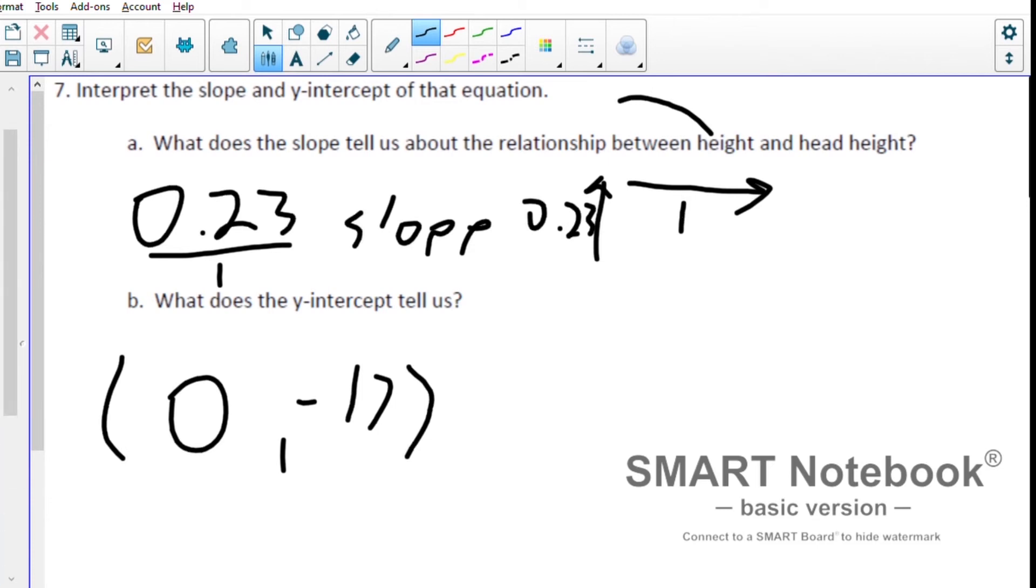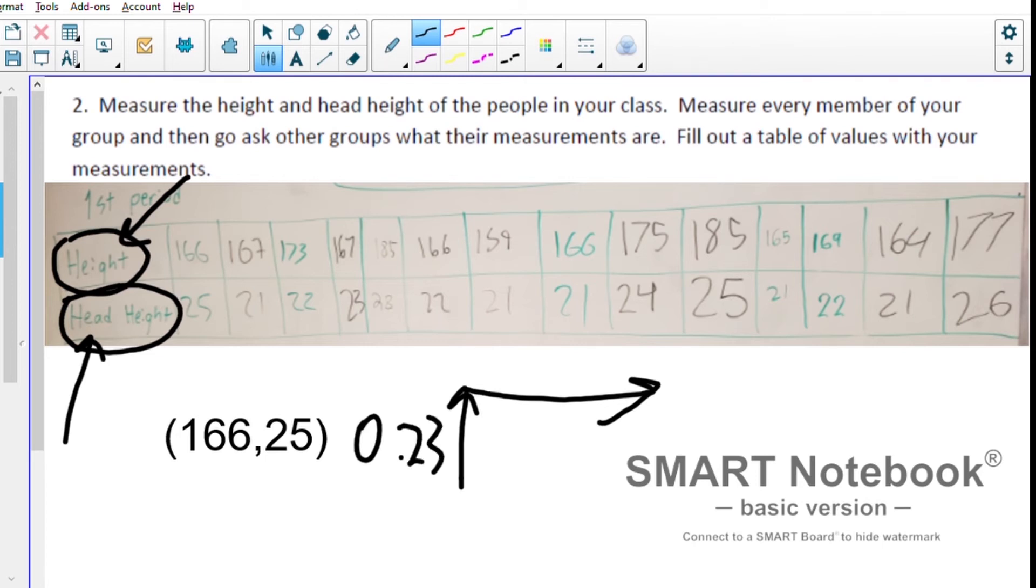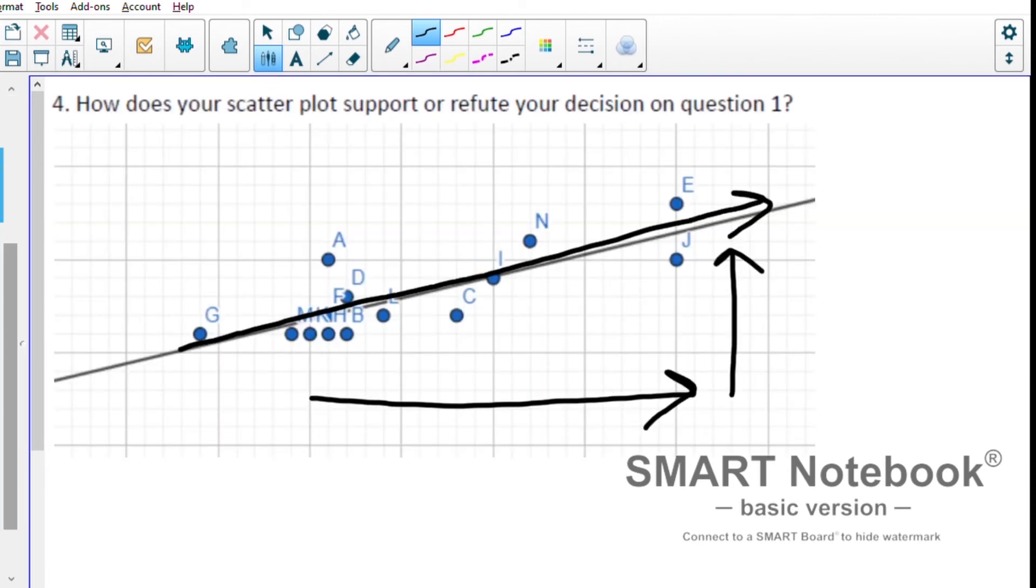Our slope is rise over run. The 0.23 is our rise and our run is one. Our x variable is height and our y variable is head height. When we have 0.23, that means that our head height just went up by 0.23, and when we go to the right one, that means that our height increased by one. Put those together, and the meaning is that every time our height increases by one centimeter, our head height should also increase by 0.23 centimeters.